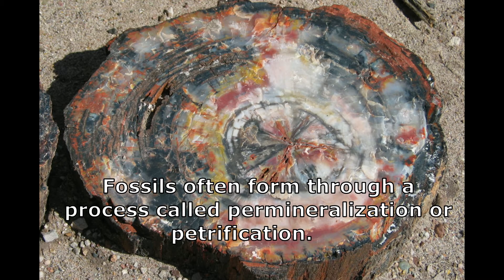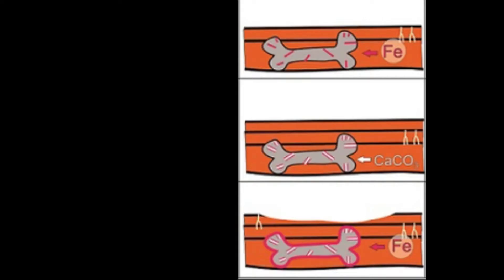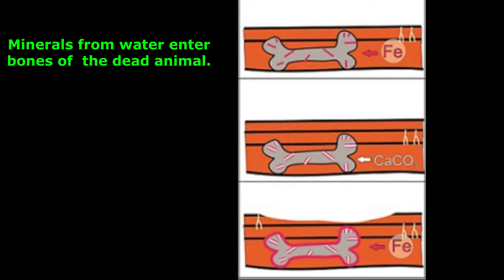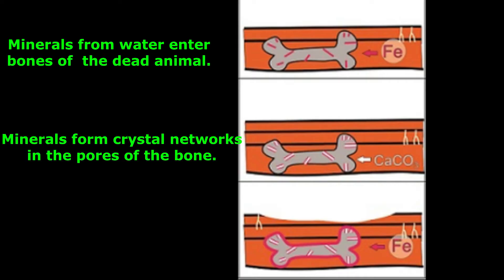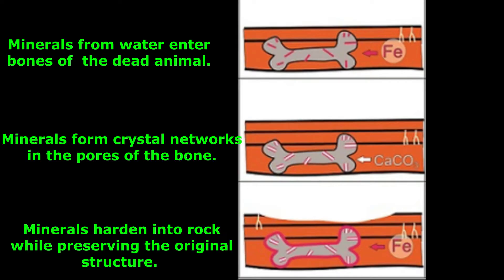Fossils often form through a process called permineralization or petrification. During this process, minerals from water enter the bones of the dead animal. Then minerals form crystal networks in the pores of the bone, and finally minerals harden into rock while preserving the original structure of the animal.